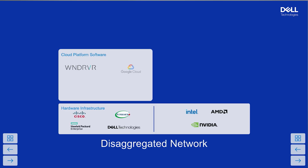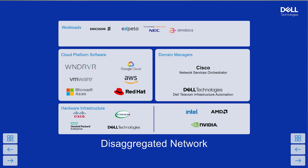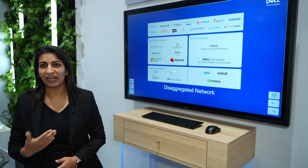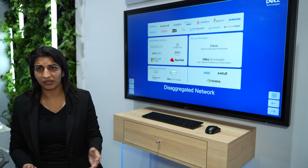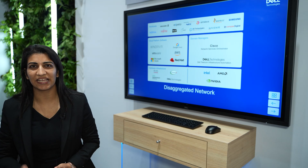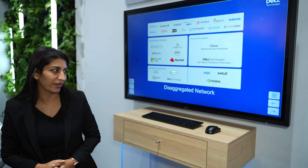As you all know, the telecom industry has taken massive transformation from a proprietary vertically integrated architecture to a cloud-native disaggregated architecture. It has its own challenges in terms of deployment, interoperability, and time to market. This is why Dell has come up with the solution by partnering with Red Hat, which is what we call Dell Telecom Infrastructure Blocks for Red Hat.